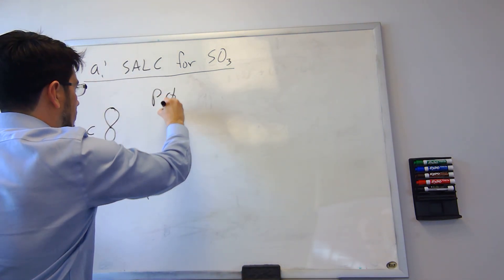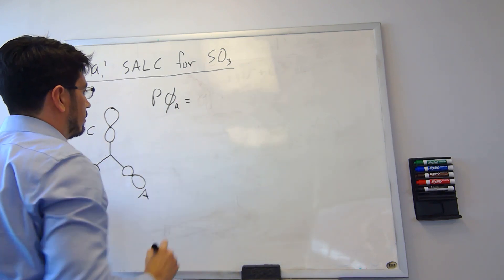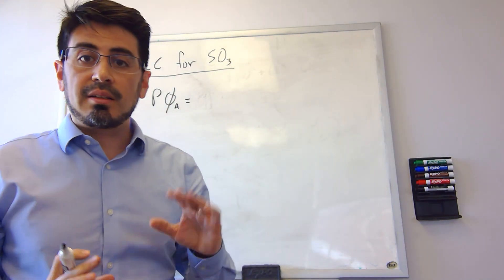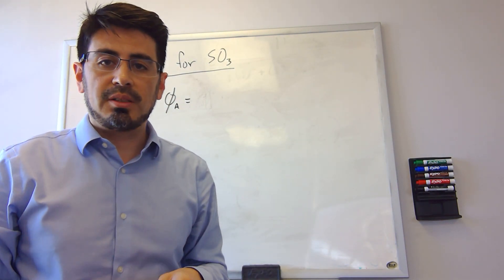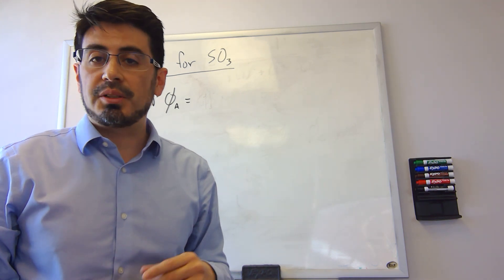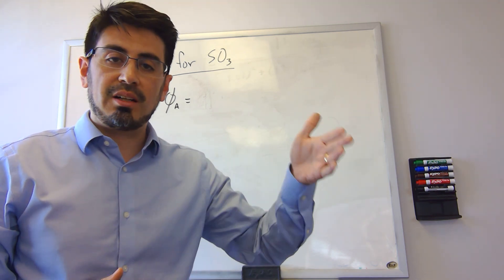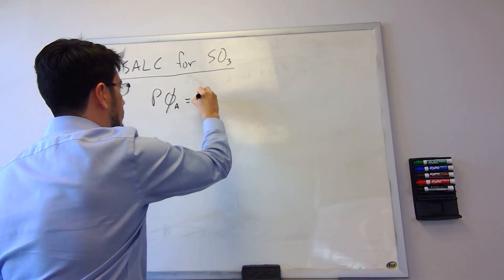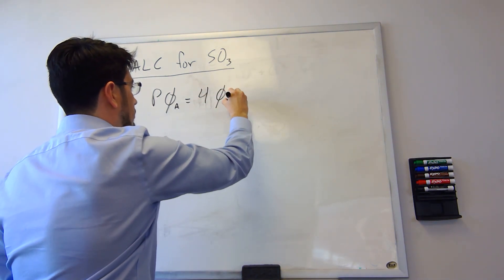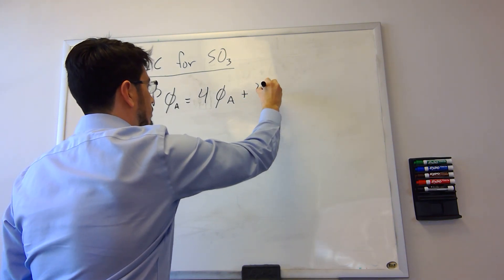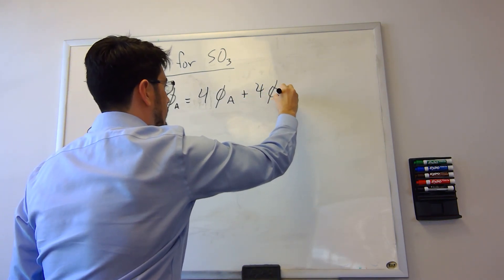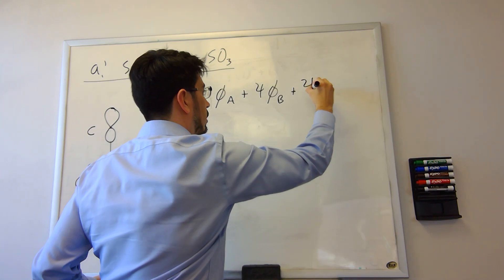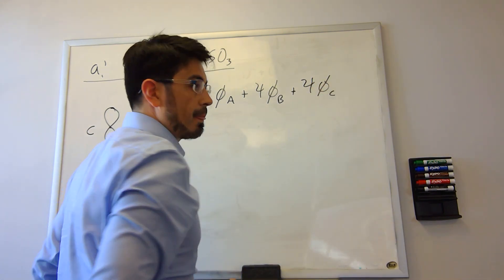So we applied the projection operator on φA and in the class we used the point group D3h to find what the projection of that φA would give us for the SALC, and we found the following result: it was 4φA plus 4φB plus 4φC.